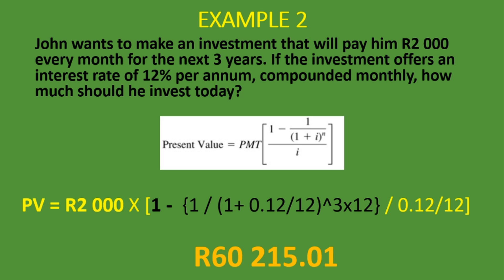We've looked at examples where the same payment is made at the end of every month or every year — like a home loan where you make the same payment every month. But what if you're investing in a project where the cash flows are different amounts every period? We have another lesson on net present value using tables and formulas — you'll find the links in the description below. If you've gained value from this lesson, please consider subscribing, liking, and sharing. Till next time, cheers.